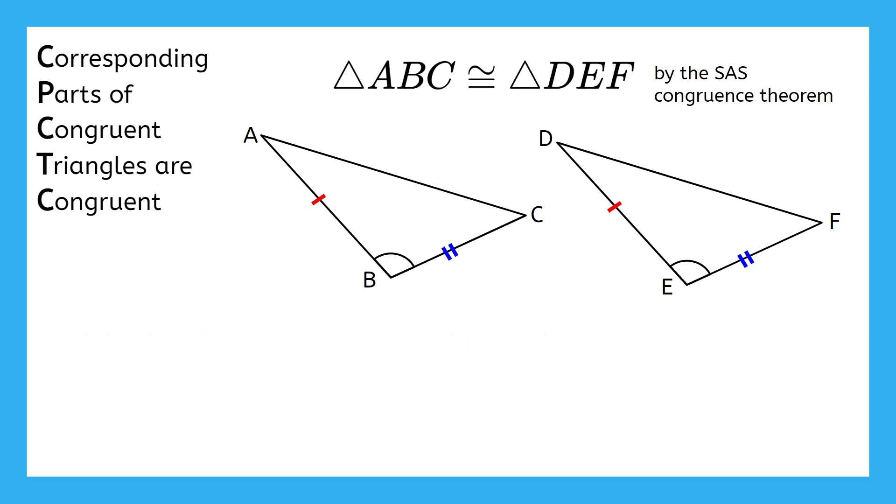CPCTC allows us to state all other congruences within the two triangles that weren't already given to us, such as angles A and D being congruent, sides AC and DF being congruent, and finally, angles C and F.